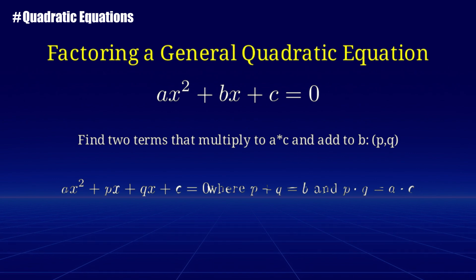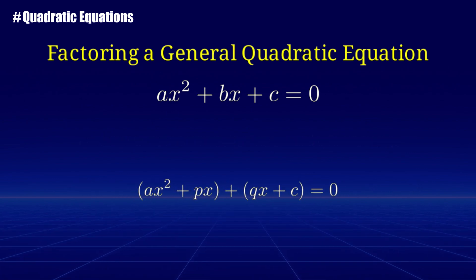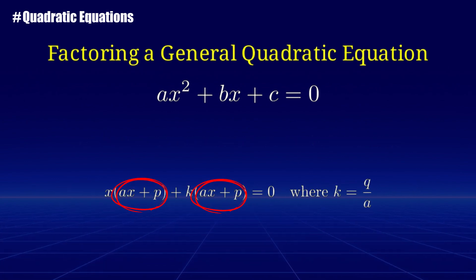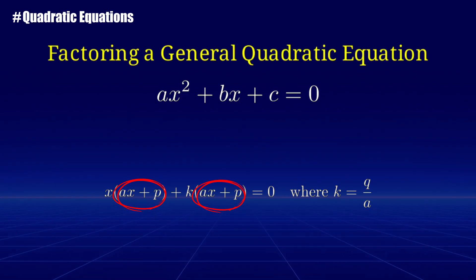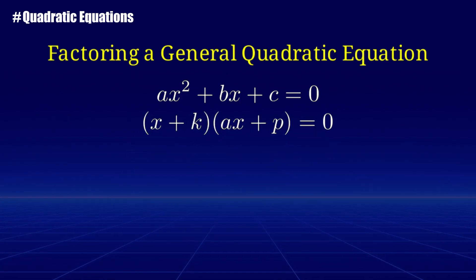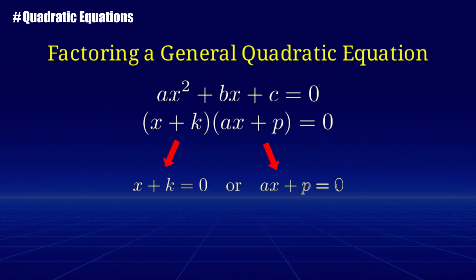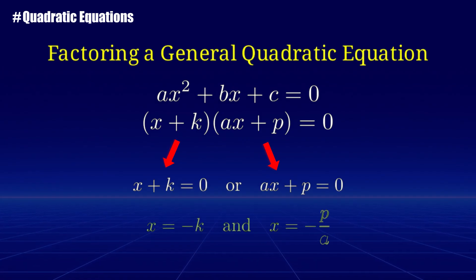Then, we group the terms into two pairs and factor out the greatest common factor from each pair. After that, we combine the common factors into a single product and set each factor equal to 0 and solve for x.